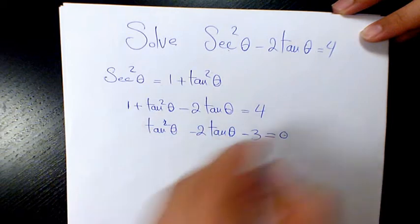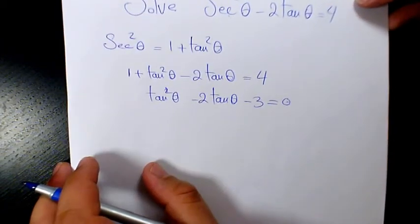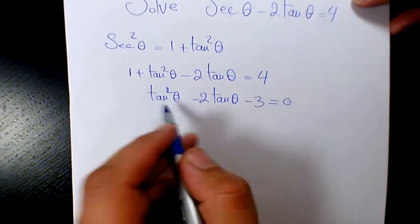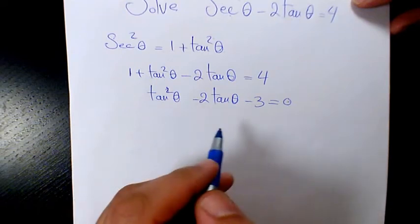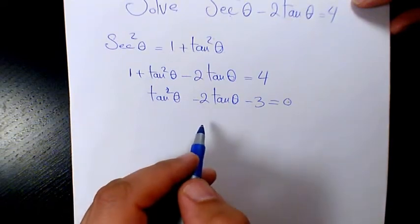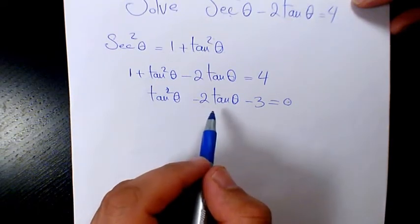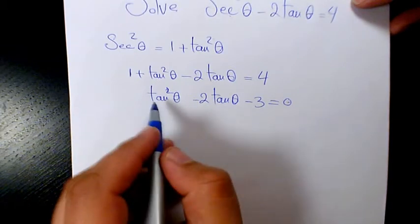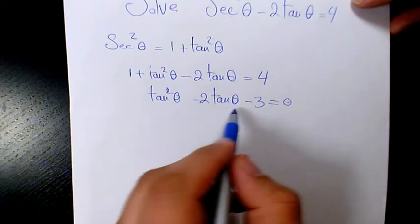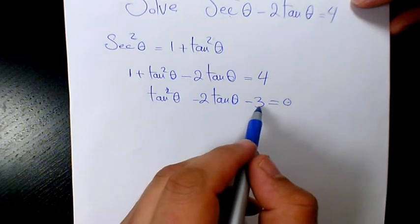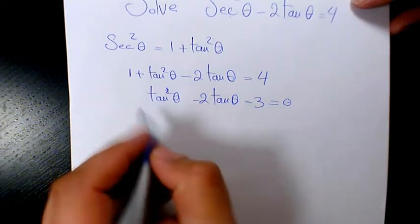So then I have a quadratic equation I need to solve. We can use either the quadratic formula or we can solve it by factoring. If you solve it with factoring, we have two numbers multiply to negative three and add to negative two. So it's going to be (tanθ - 3)(tanθ + 1) = 0.